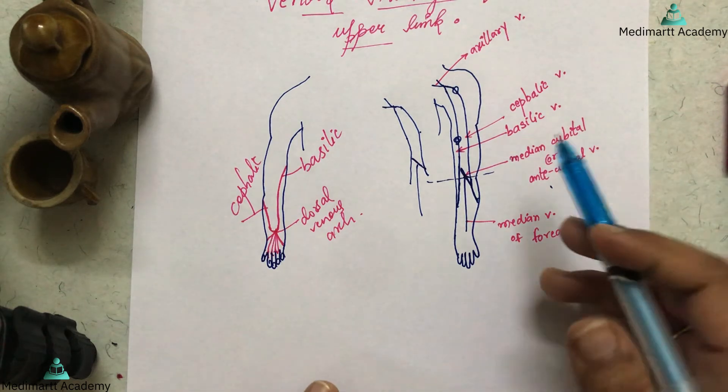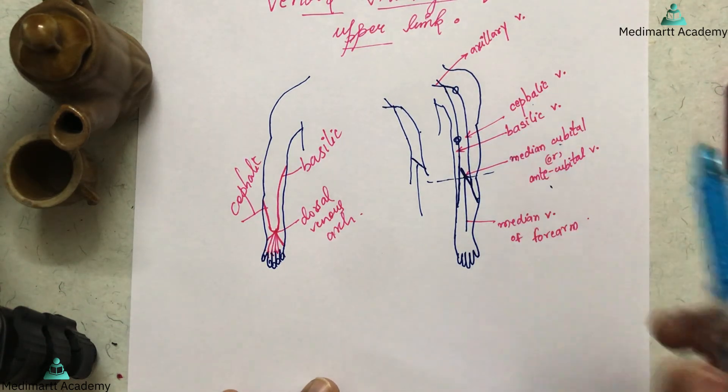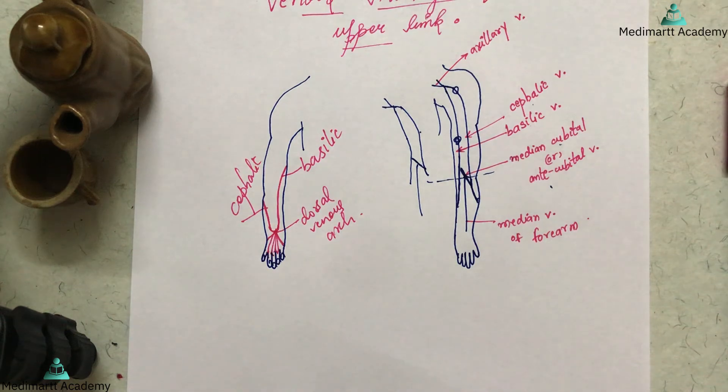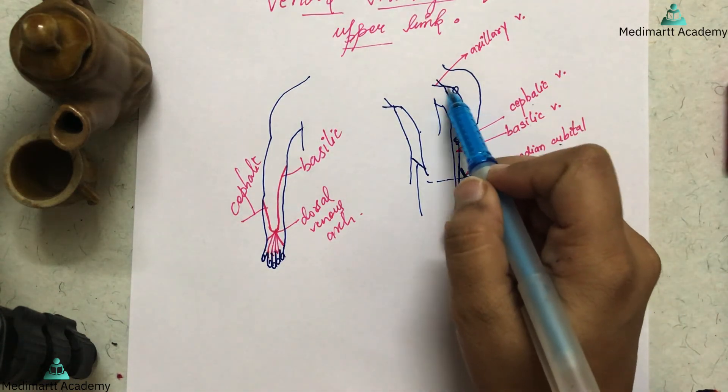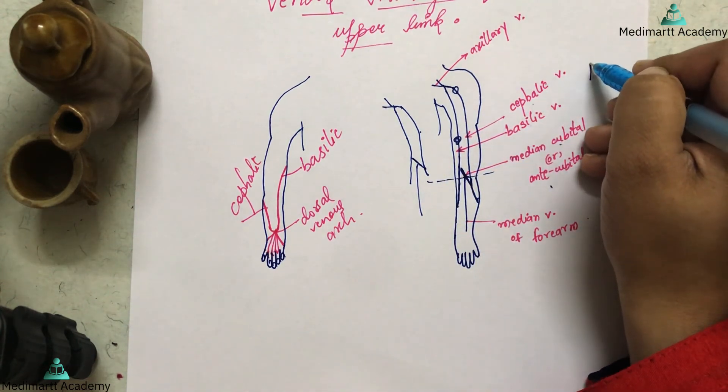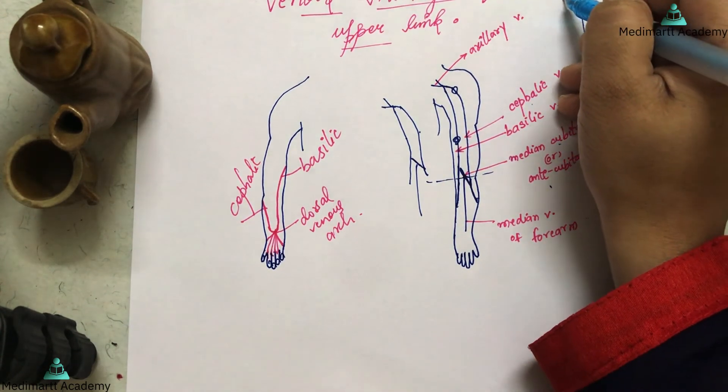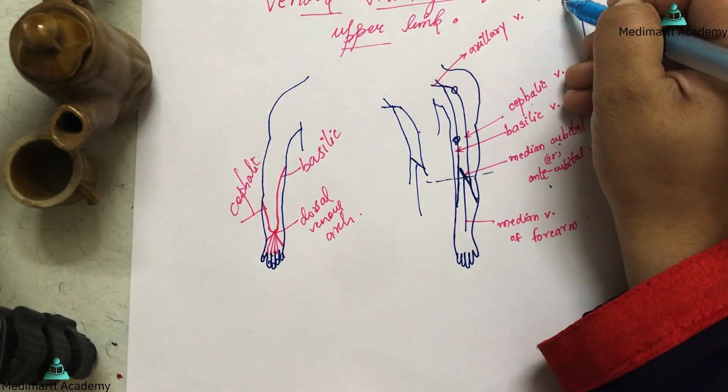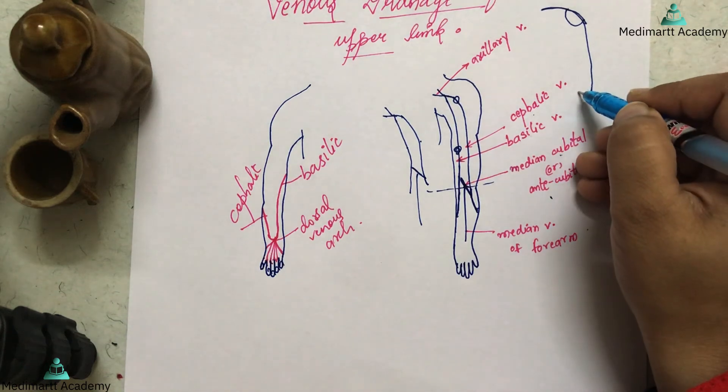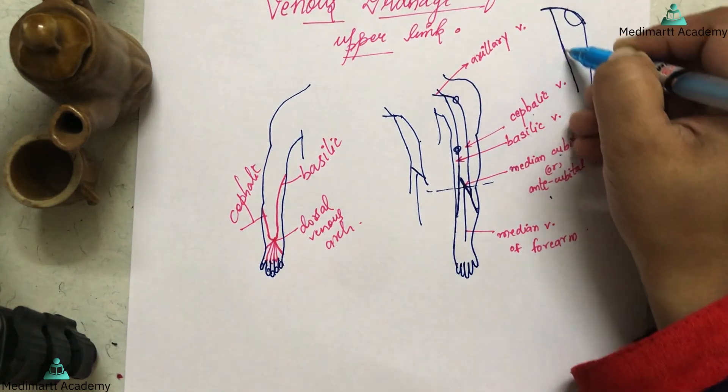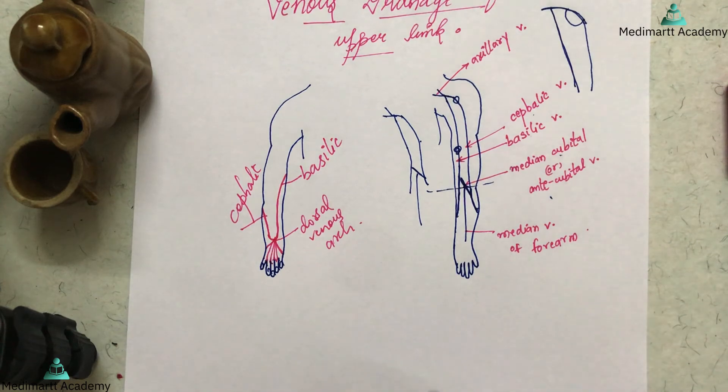For the cephalic vein and basilic vein, you cannot use a catheter using the cephalic vein since there is an angulation when you go from cephalic to axillary, so the catheter can be disturbed. But from the basilic vein to the axillary vein, it is a direct path, so a catheter can be inserted through the basilic vein rather than the cephalic vein. This is the importance of this.